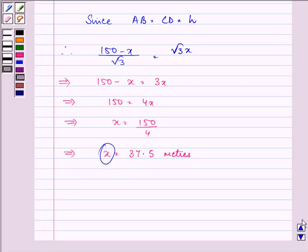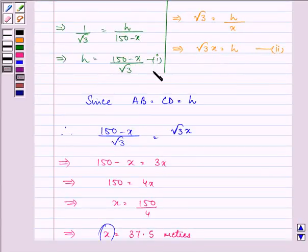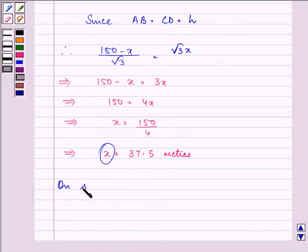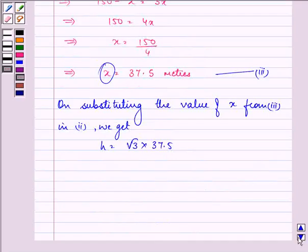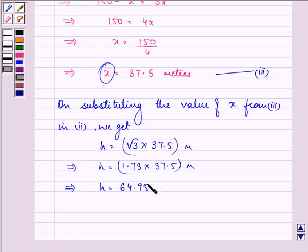With the help of this value of X, we can find out H by substituting X in any of these two equations. So, on substituting the value of X from equation 3, we get H is equal to root 3 into 37.5 meters, that is further equal to 64.95 meters.